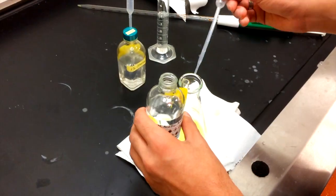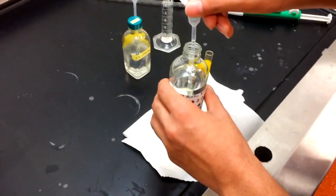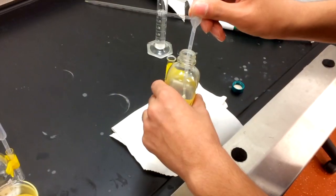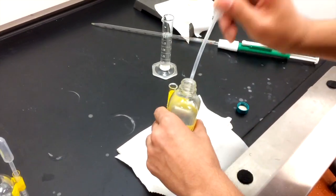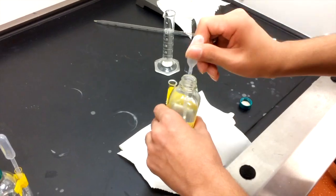Add 2 milliliters of 6 molar acetic acid and 4 milliliters of 1% starch. Give it a small stir and set that aside.